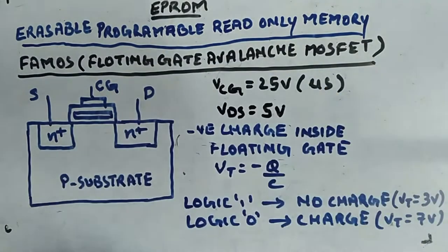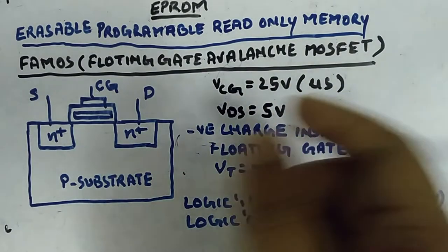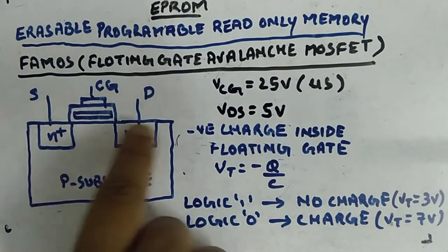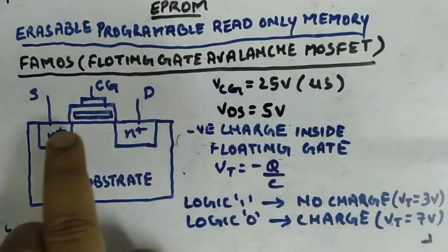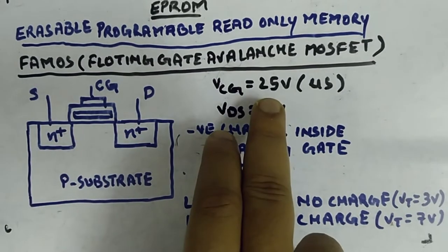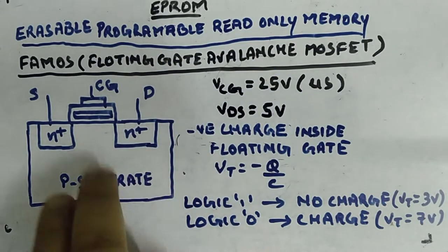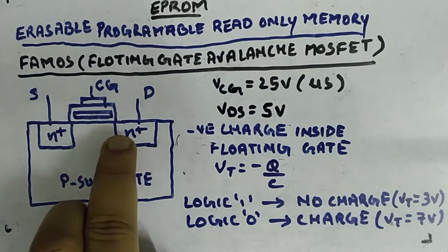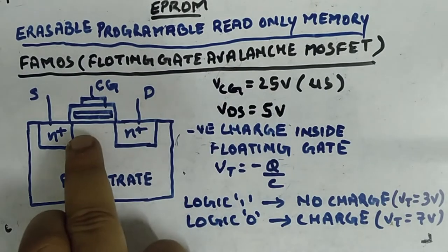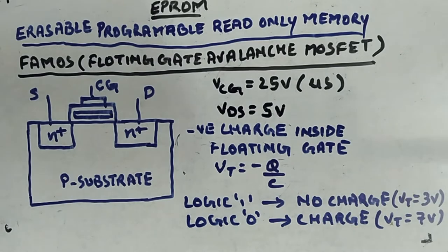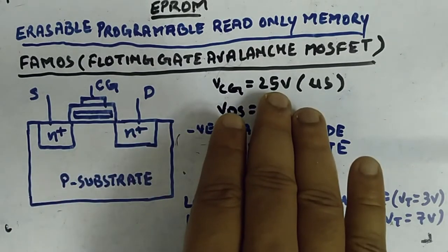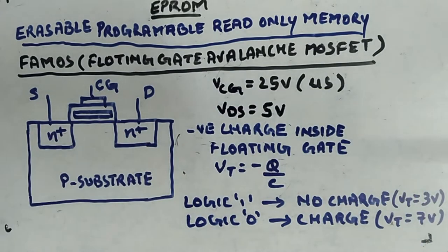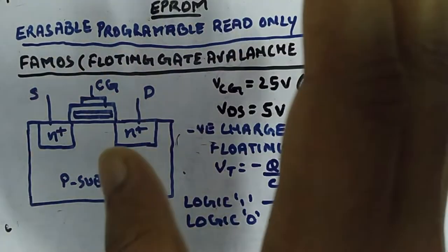You apply 25 volts for a short duration — just for a microsecond — to achieve what you want. When VDS is applied and you apply enough gate voltage greater than threshold voltage, a channel forms and current flows. When you apply 25 volts for a short duration, the channel is still there and conduction happens, but because of such high voltage applied briefly, some electrons will jump to the floating gate. This negative charge will reside in the floating gate for 5 to 10 years, until you erase it.